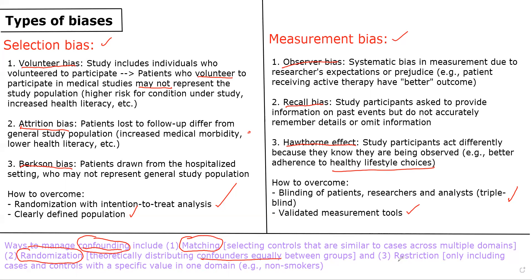The third way is called restriction, which is a form of matching in which you only include cases and controls with a specific value in some domain you're worried about as a potential confounder. For example, if you're studying the impact of drinking on risk of squamous cell carcinoma of the head and neck, you might restrict the analysis to non-smokers because you're worried smoking might confound that relationship. By restricting to non-smokers, every patient in the study is a non-smoker, so smoking cannot have an impact on the association you're studying.